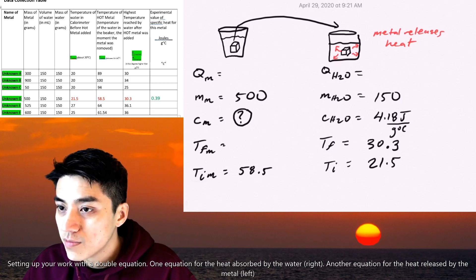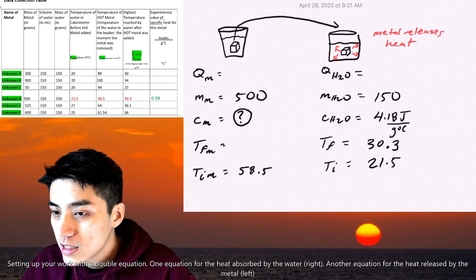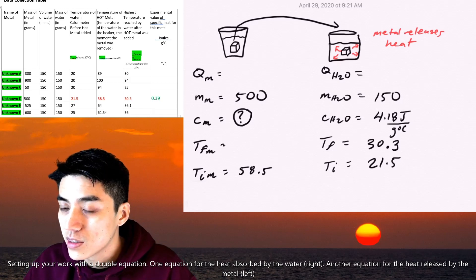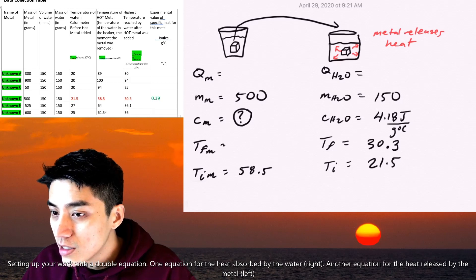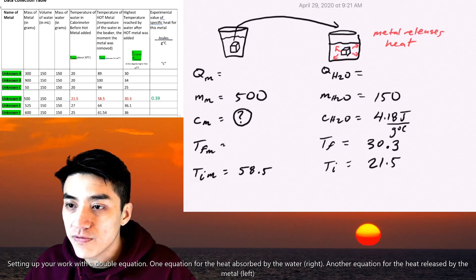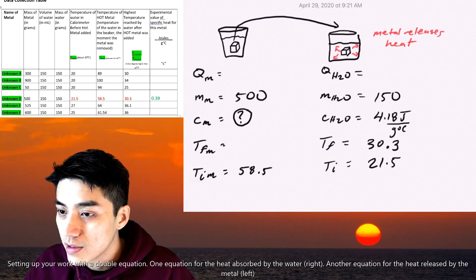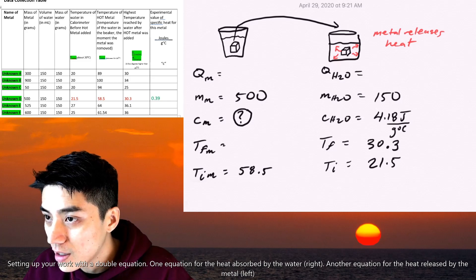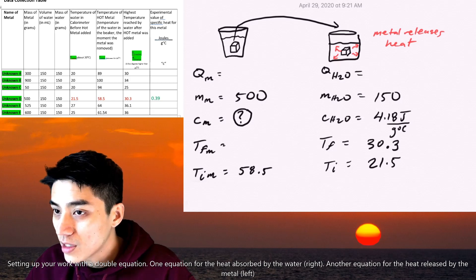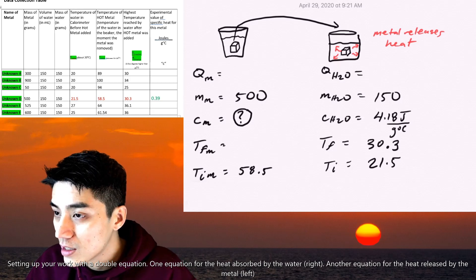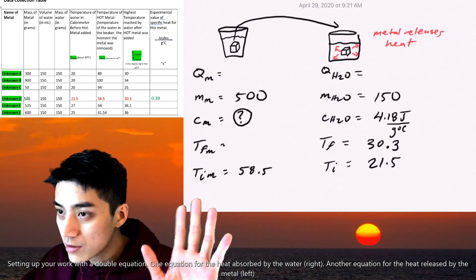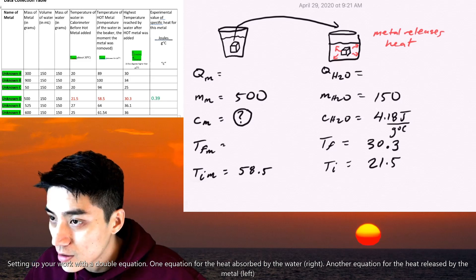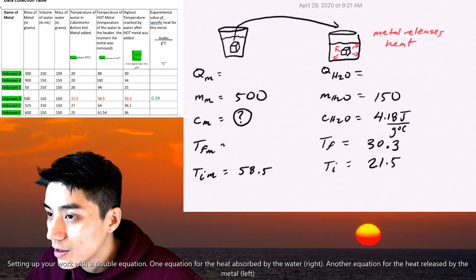So the mass of my metal was 500. T final of the metal you're going to see is also 30.3. I'm going to fill that in in just a minute just to show you later on. And T initial of the metal is 58.5 degrees Celsius because that was the temperature of the water the moment that we took the metal out and we transferred it over. So you can see in the diagram, we take the metal out and then we put it inside that calorimeter. And you can see with like the little light red arrows just represent the heat that's given off by the metal cube.